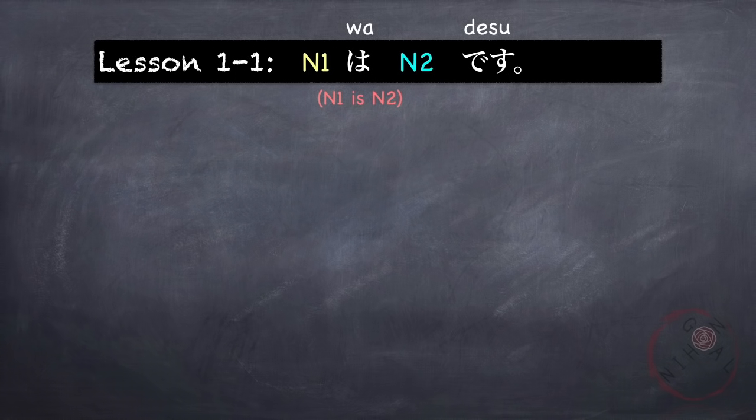Our first grammar point is N1 wa N2 desu. N1 is the subject or the topic of the sentence, followed by wa. This is the ha syllable, but since it is a particle, it is read as wa, and it is the topic marker of the sentence. N2 describes N1, followed by the word desu. It is a Japanese copula which indicates that N2 is the predicate in the sentence — it describes N1.